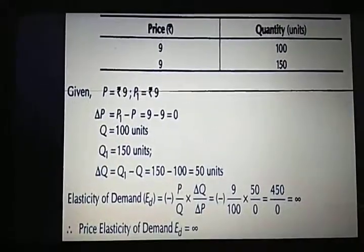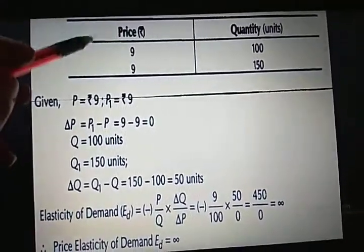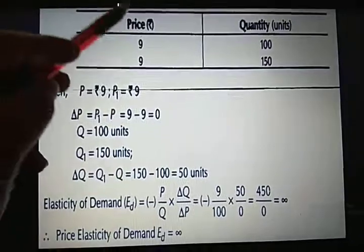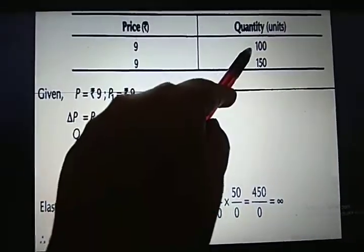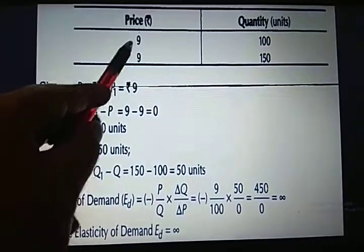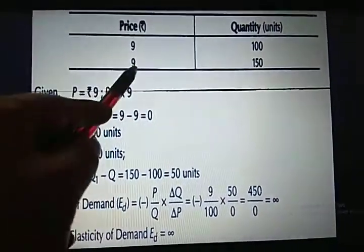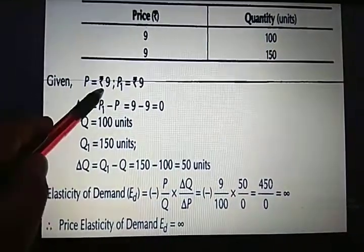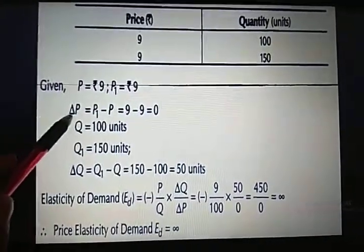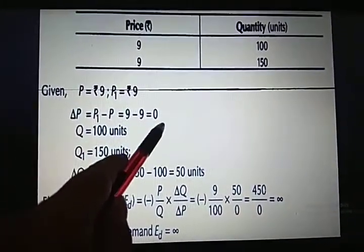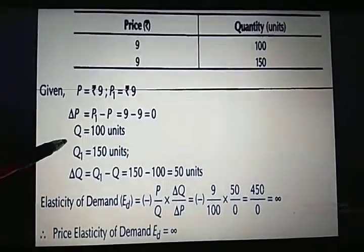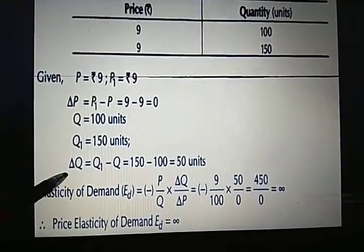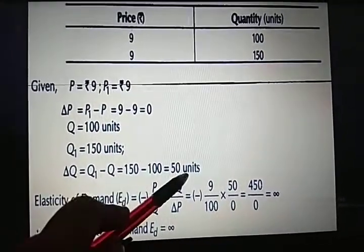Now you have a question: calculate the price elasticity of demand where 100 units were demanded at a price of rupees 9, and when the price is still the same, the demand rises to 150 units. So your P is 9 and P1 is also 9. Delta P will be P1 minus P, which is 9 minus 9, equal to 0. Your Q is 100 and Q1 is 150, so delta Q is Q1 minus Q, equal to 50 units.